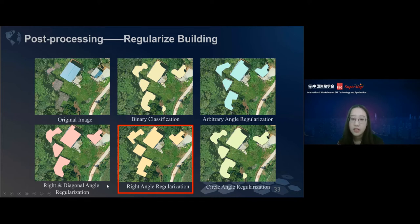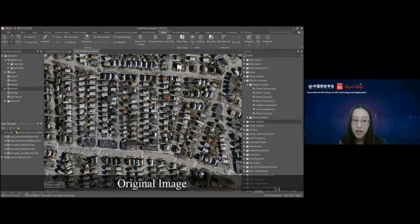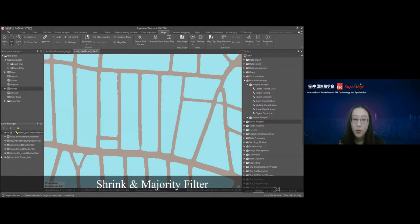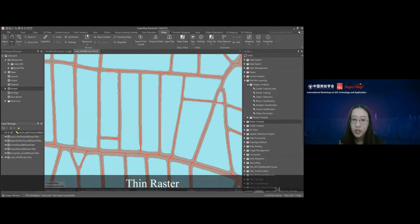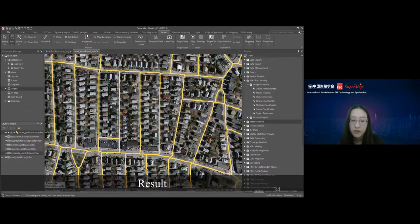Let's see the road extraction post-processing workflow. After we extract the road using the binary classification tool, we connect it with some post-processing tools, like expand, shrink, majority filter, thin, and raster to vector data. This is our original image. The gray lines are the binary classification results, these are roads. We expand, shrink, majority filter, and thin the raster to get this red line. Then we convert them into vector to get our vector road data. You can see the connectivity of the road has been improved.